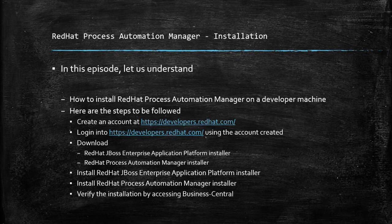Once you have logged in, you can download the installer for JBoss Enterprise Application Platform and Red Hat Process Automation Manager. To install Red Hat Process Automation Manager, you will need to first install the JBoss Enterprise Application Platform. So please download the two installers.